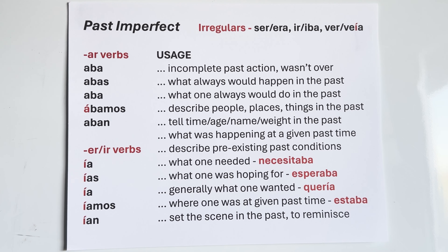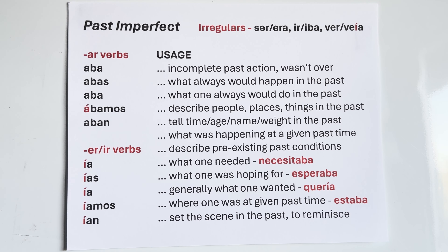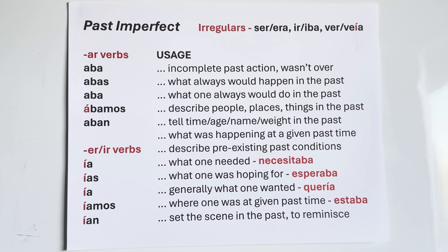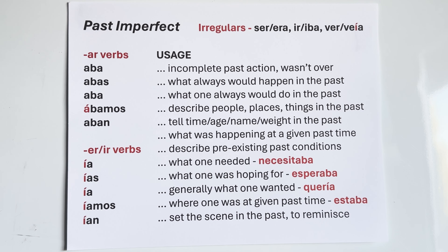Let's look at usage. First: incomplete past action — it wasn't over. If I want to say when I got up, it was raining: cuando me levanté — that's preterite — llovía, or estaba lloviendo. In Spanish we have an optional form: you can say llovía, or take estar in the imperfect — estaba — plus the -ing form lloviendo: estaba lloviendo. Both describe an incomplete past action that was not over.